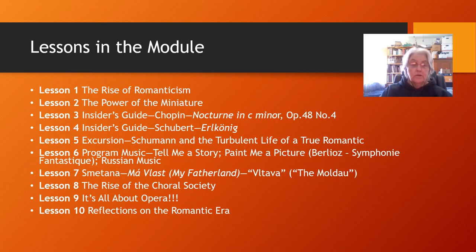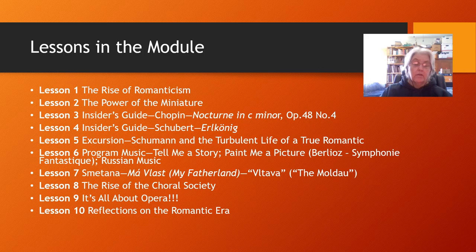As you can see, we go from the rise of Romanticism through the power of the miniature. We look at some Chopin, some Schubert. We talk about Schumann and program music, Russian music, Smetana, who was a Czechoslovakian composer. All about big choral societies and groups, opera, and some reflections. So this is kind of a long module — let's go ahead and dig in.